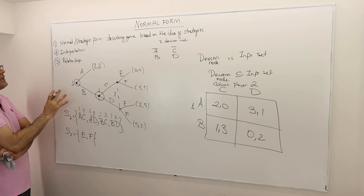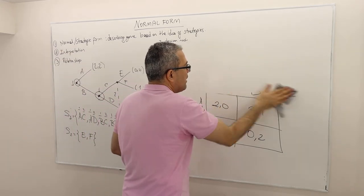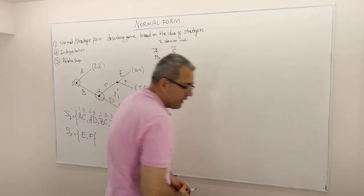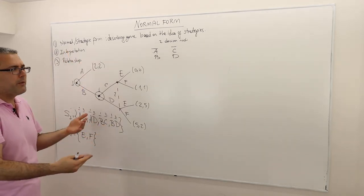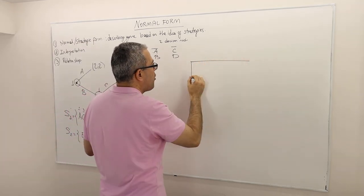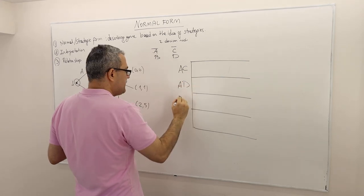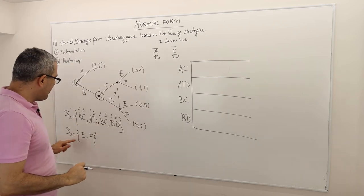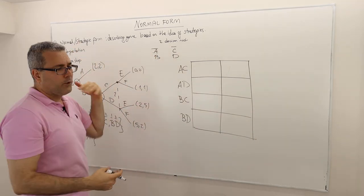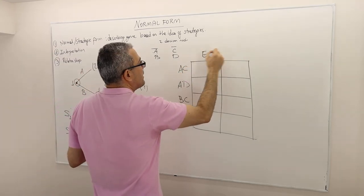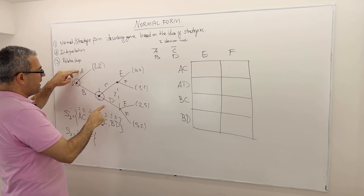How can we transform this game into a strategic form game? We put the strategies of the first and second player in a table and then put the payoffs. Since player one has four strategies, there should be four rows: AC, AD, BC, and BD. Player two has two strategies, so there should be two columns. Therefore the strategic form of this game is a four-by-two game with columns E and F.